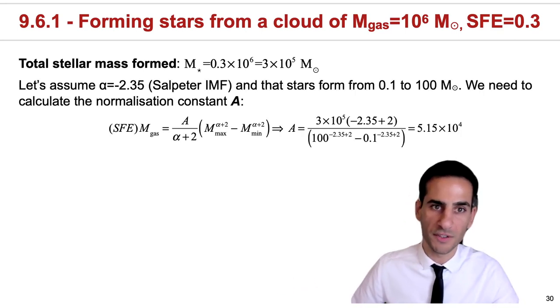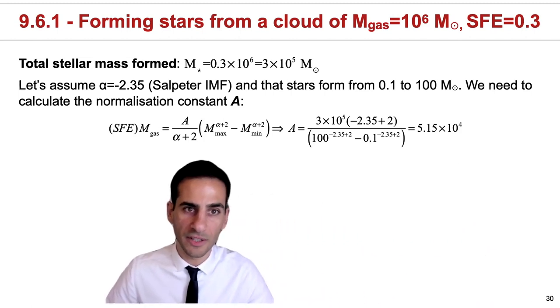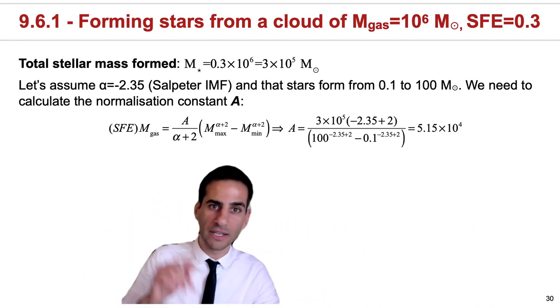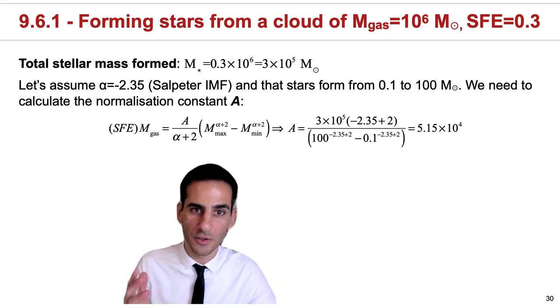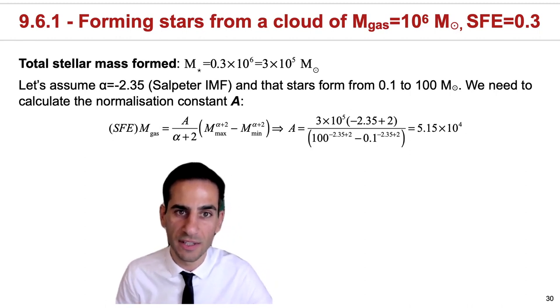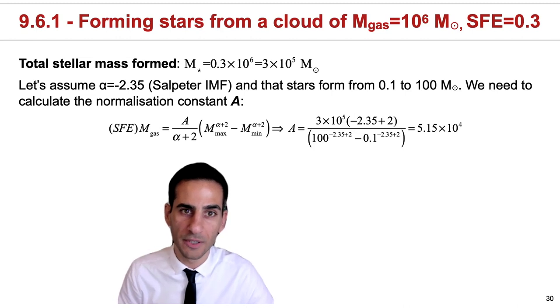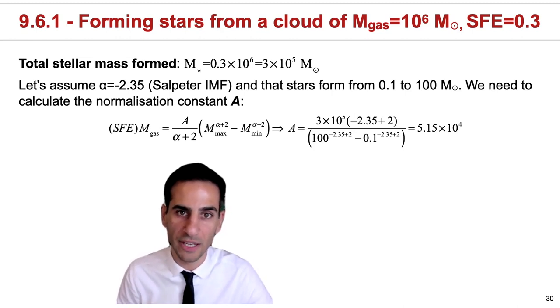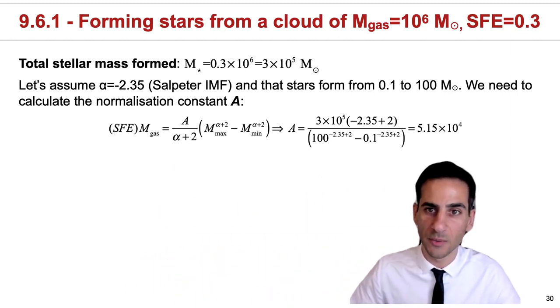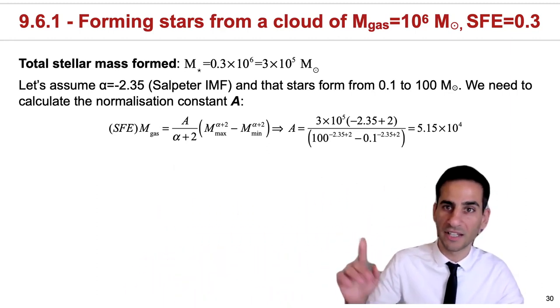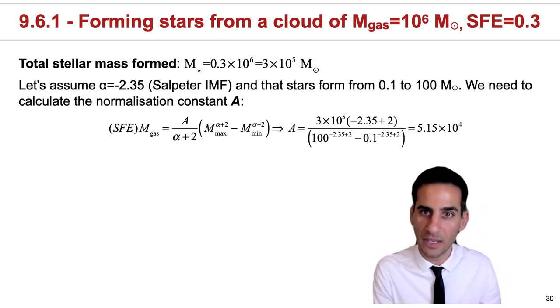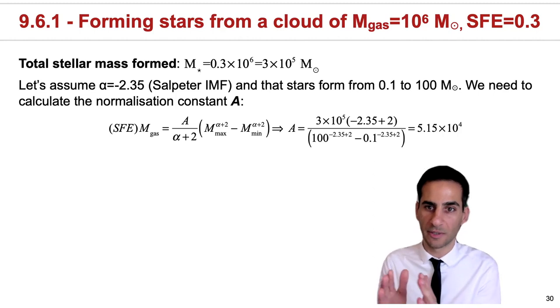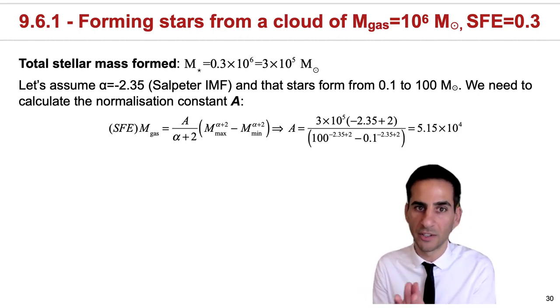What you typically need to do is assume some α, the exponent of the power law. In this case we're using -2.35, usually referred to as the Salpeter IMF because of the author who established this mostly for our own galaxy. We need to set some limits: we want the total number of stars, so we'll go from the minimum stellar mass to the typical maximum, 0.1 to 100 solar masses.